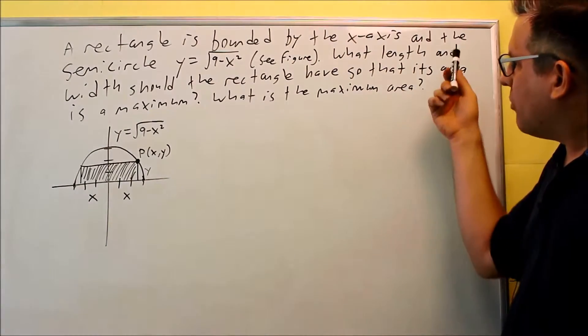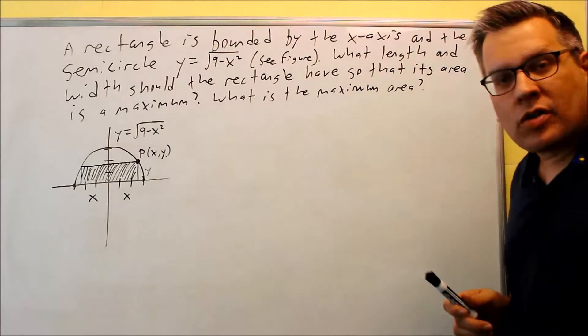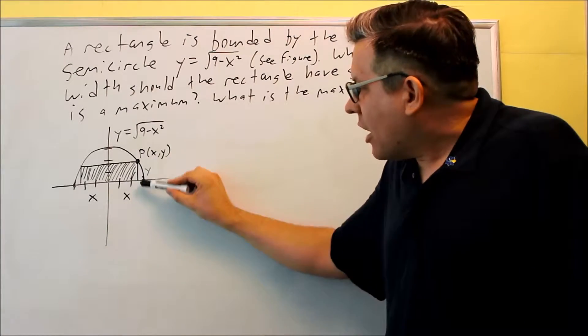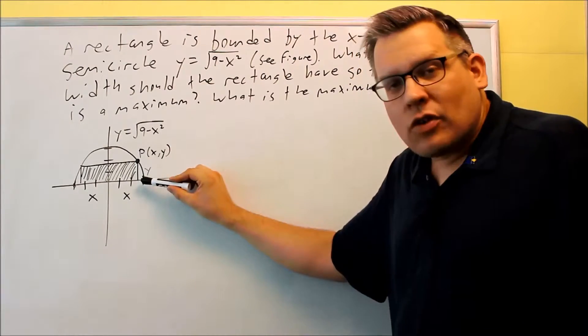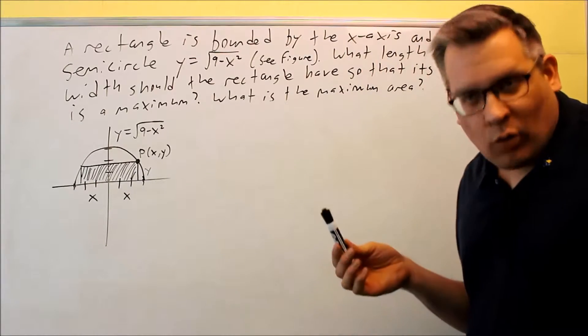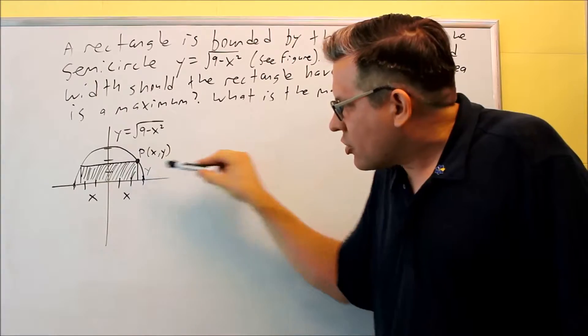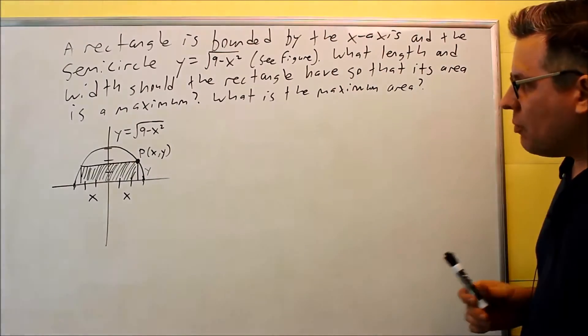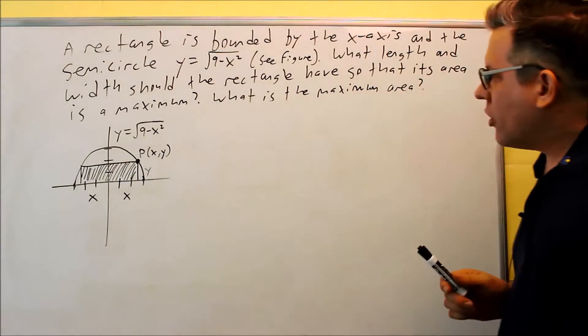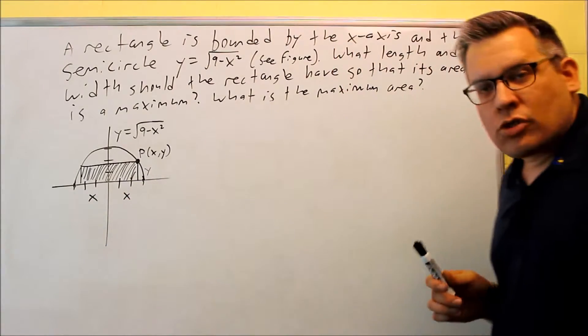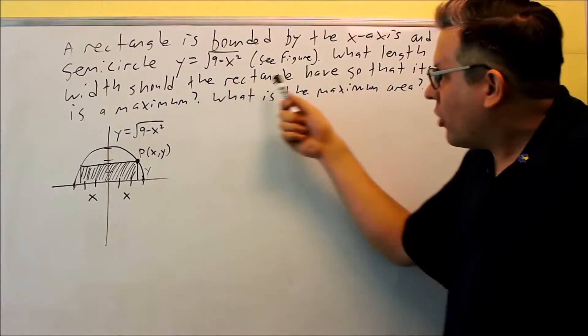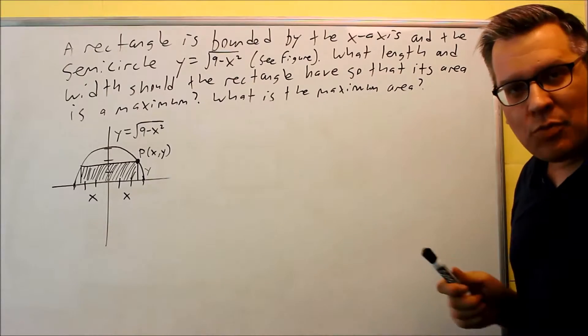It's also bounded by the semicircle, square root of 9 minus x squared. The height of this box, which is actually the same thing as our width, depends on what point you pick along this curve. So because it's going to change, what it's asking for is, what do I have to set the x and the y equal to, what dimensions should I put on this rectangle so that I get the maximum area.